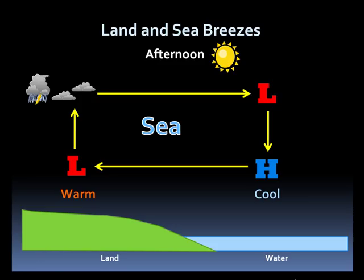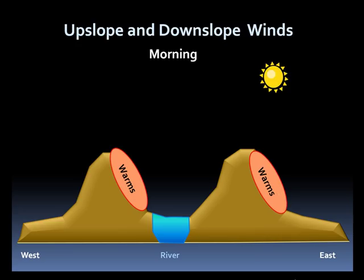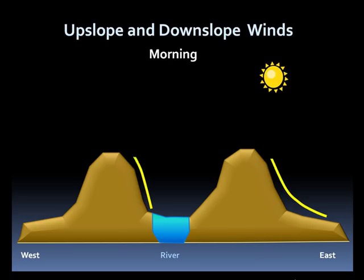Next, we turn our attention to upslope and downslope winds. This image depicts two mountains, or areas of higher elevation, with a river valley running between them. In the morning, the sun will start to warm the eastern slopes, thus warming the air. The air will want to rise up the slope as a result, leading to an upslope wind.